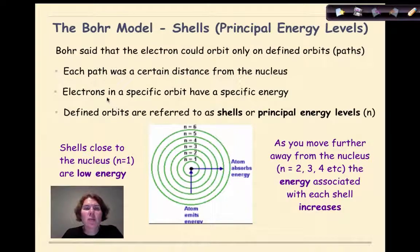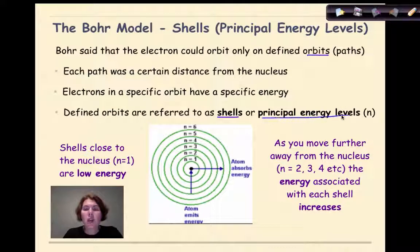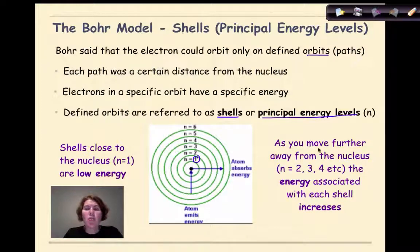So now we're going to look at the Bohr model in more depth. Bohr said that the electron could orbit only in defined orbits, or paths. Each path was a certain distance from the nucleus. Electrons in a specific orbit have a specific energy. Defined orbits are referred to as shells or principal energy levels. Shells that are close to the nucleus, like N equals one, are at a low energy. As you move further away from the nucleus, like to N equals two, or three, four, five, or six, the energy associated with each shell increases.